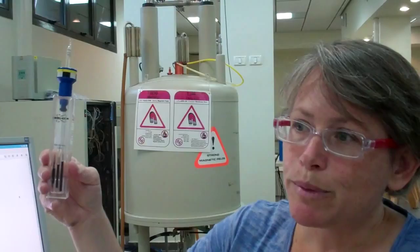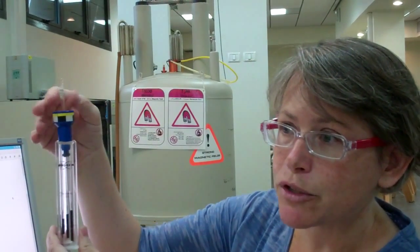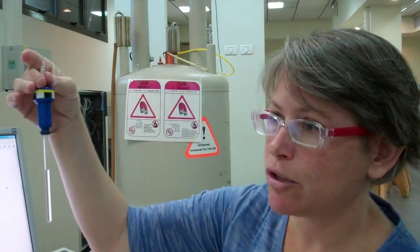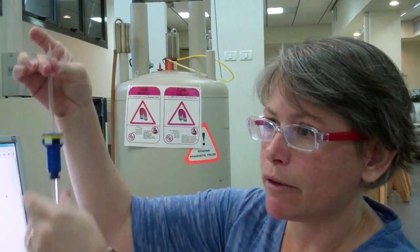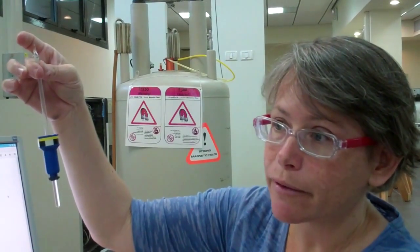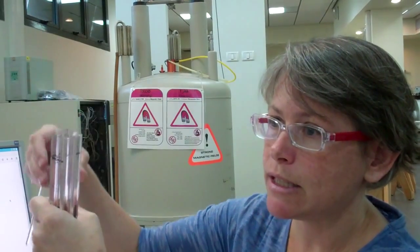If the glass sample tube sits too low, it may hit the probe and break. The spinner certainly won't sit in the right place for sample spinning. If it's placed too high, the solution might not reach the detector, and then we're doing an NMR experiment on air. So you do want to make sure that the tube is correctly placed into the spinner.